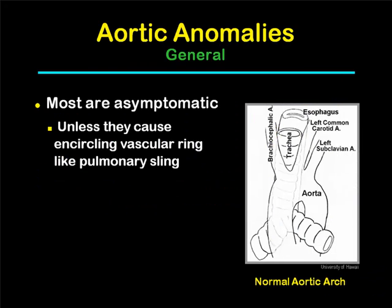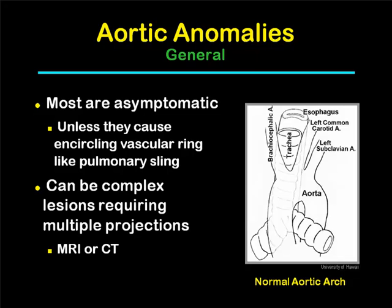In general, aortic anomalies are usually asymptomatic unless they cause an encircling vascular ring like a pulmonary sling or a double aortic arch. They can be complex lesions and they frequently require multiple projections using MR or CT.